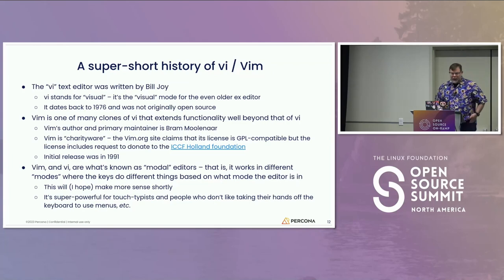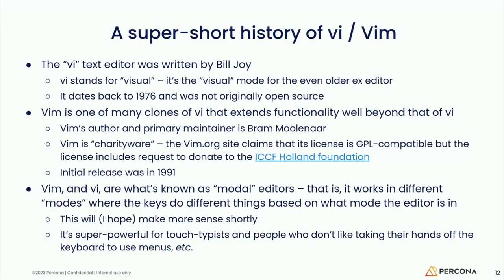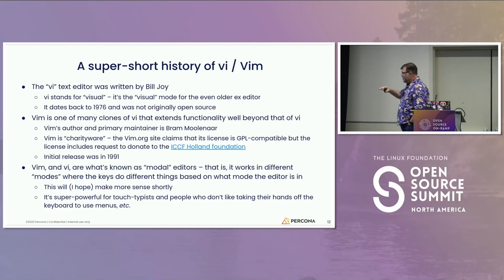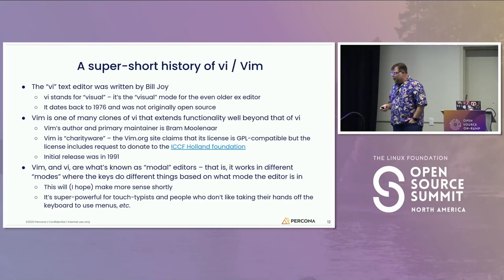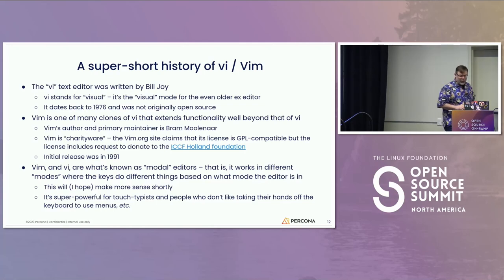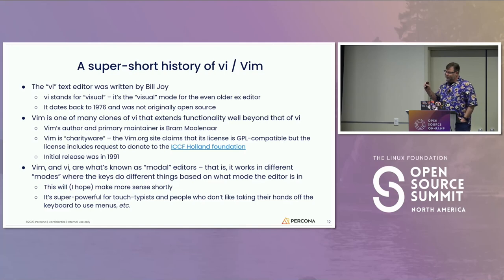Let's talk about VIM. I want to give a short history of VIM and VI. VI was written by Bill Joy as a visual mode for the EX editor, going all the way back to 1976. Later, a guy named Bram Moolenaar wrote VIM in the early 90s — about the same time Linux was starting — and that was VI Improved. He started adding functionality because bare VI is not very feature-complete. Tabs, for example, were added to VIM around version 7 in the early 2000s.